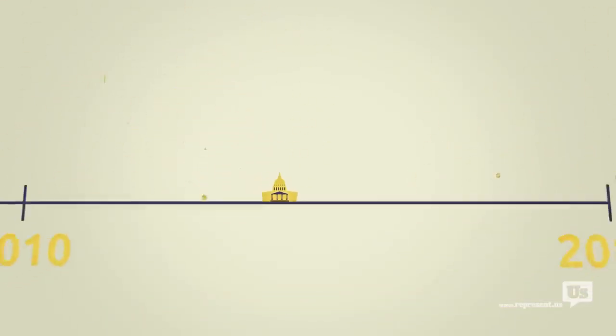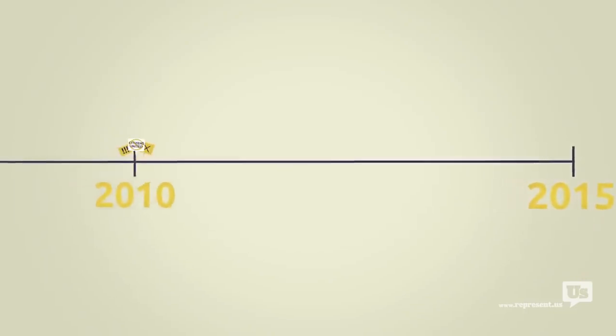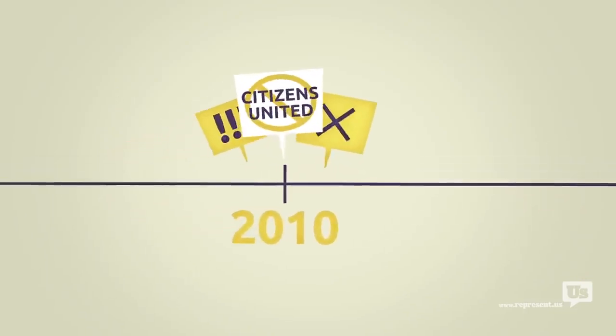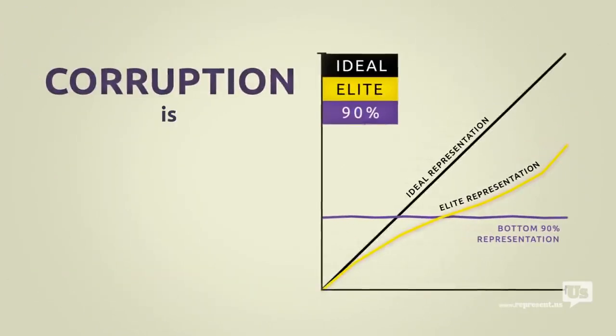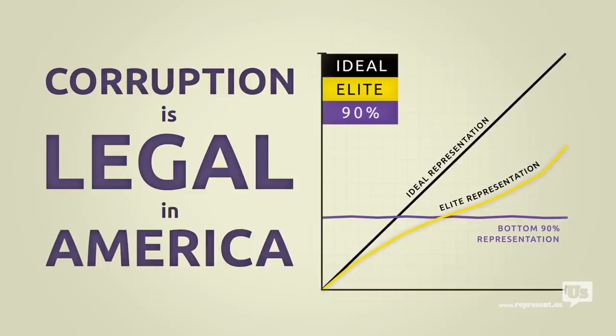You know, there's this idea out there that this only became a problem after the Supreme Court's Citizens United decision in 2010. But the data goes back almost 40 years, and the results are clear. Corruption is legal in America. And as long as it is, anyone who can spend money to buy political influence will.